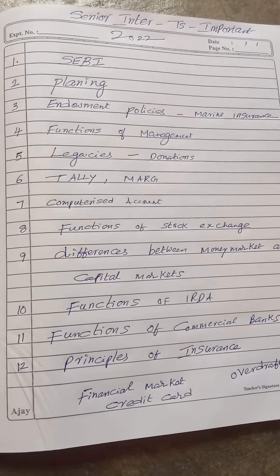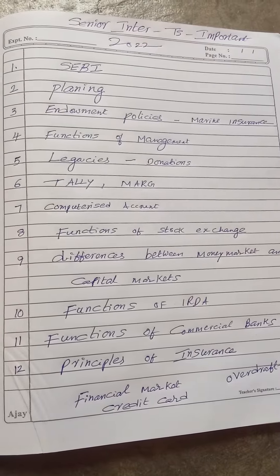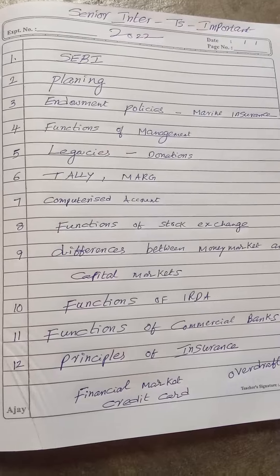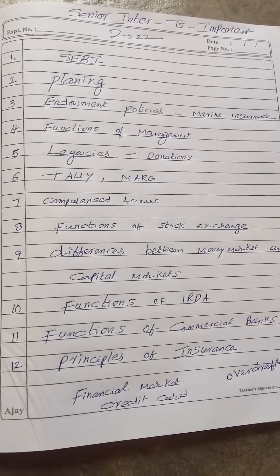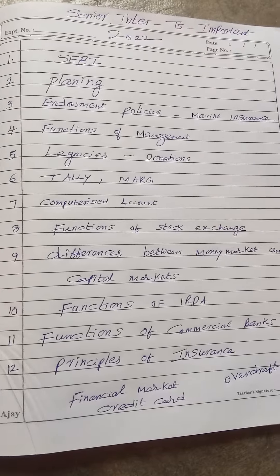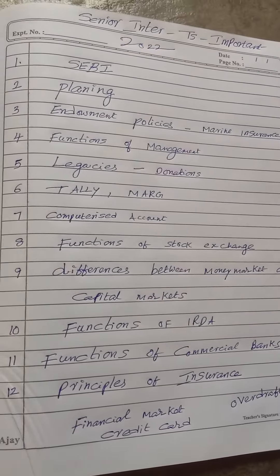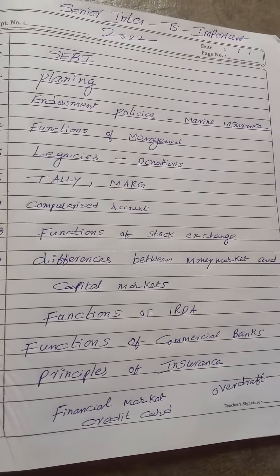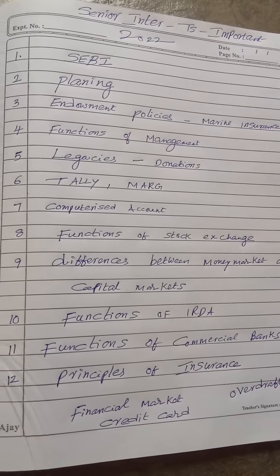Then legacies and donations. Tally and Mark — these two are accounting software which are used by many medium-sized and large-scale companies, and small-scale companies also. Computerized accounting means doing accounts with the help of computers, which is known as computerized accounting. Then functions of stock exchange — it provides ready market and all.